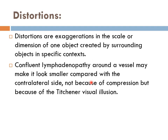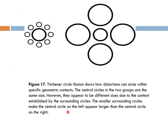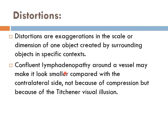Another type is distortions — exaggerations in the scale or dimension of one object created by surrounding objects in specific contexts. Like the Ebbinghaus circle illusion: two circles in the center are the same size, but when surrounded by multiple small circles they appear larger than when surrounded by large circles. Clinically, when we see confluent lymphadenopathy around a blood vessel, the blood vessel looks smaller — you may think there is compression, but actually there is none.